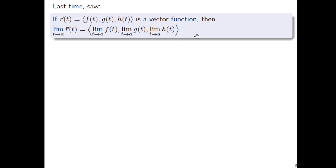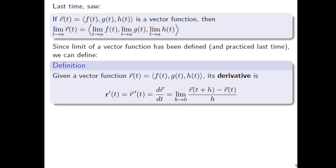Last time we saw a vector function, R with an arrow on top of it. It's really just three separate scalar functions, or three typical functions from a Calc 1 class, where the input is t. They're just separated by commas and in angle brackets. And then we saw this limit. Now since the limit of a vector function has been defined just above and practiced last time, we can talk about a derivative.